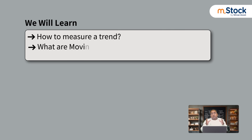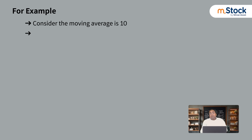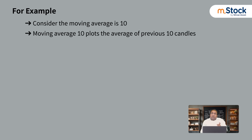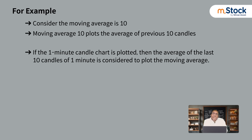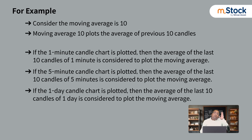We use moving averages. Now, moving averages — like candlesticks — a particular candle is of a particular time duration. Say if our time duration is one minute, and moving average is 10, that means the previous 10 candles' average will be plotted. If the candle is one minute, it's 10 one-minute candles' average. If the candle is 5 minutes, it's the last 10 five-minute candles' average. If the candle is 1 day, it means previous 10 or 20 day average.